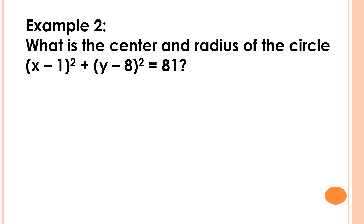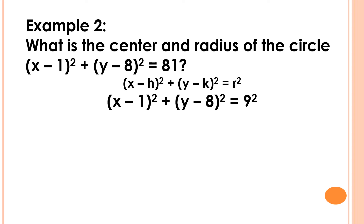For example number 2, what is the center and radius of the circle? The quantity of x minus 1 squared plus the quantity of y minus 8 squared is equal to 81. First step, we're going to write the given equation in the form of x minus h squared plus the quantity of y minus k squared is equal to r squared. And the equation will be the quantity of x minus 1 squared plus the quantity of y minus 8 squared is equal to 9 squared. The value of h is 1, the value of k is 8, and the value of r is 9.